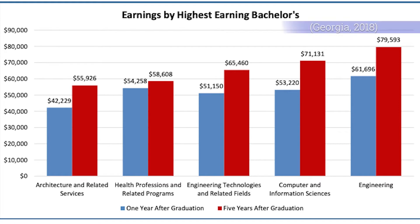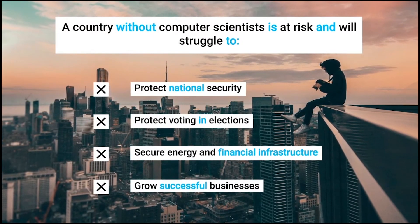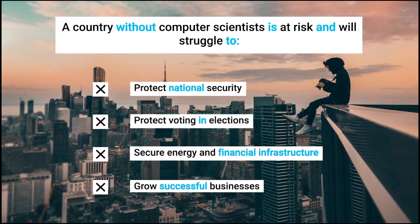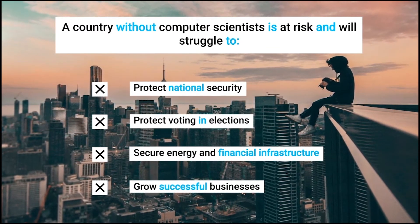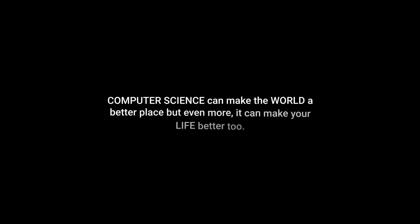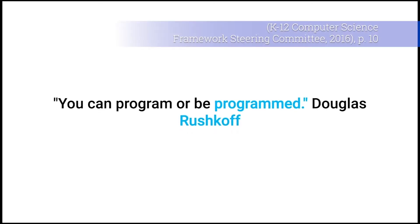The great thing about computer science, besides helping the world become a better place, is that here in Georgia, computer science bachelor's degrees are the second highest paying degrees one and five years after college — second only to engineering. There is a lot more need in computer science as well. You have the potential to make an excellent salary in addition to making the world a better place. A country without computer scientists is at risk and will struggle to protect national security, protect voting in elections, secure energy and financial infrastructure, and grow successful businesses. As they say: you can either program or be programmed.